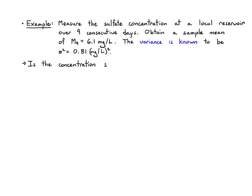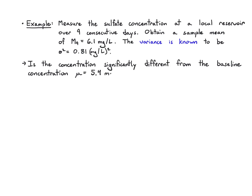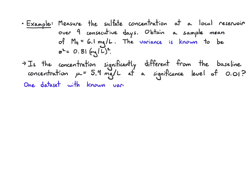Our question is: is the concentration significantly different from the baseline, which we know to be mu = 5.4 milligrams per liter? We're going to set the significance level in this problem to 0.01. Since we have one data set with a known variance, we will use a one-sample z-test.